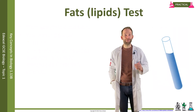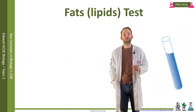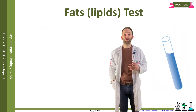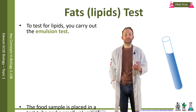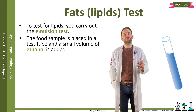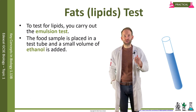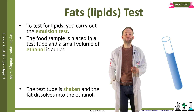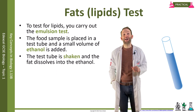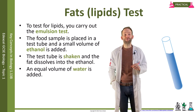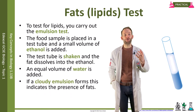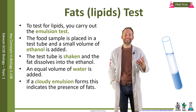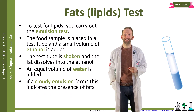To test for fats or lipids, you do something called the emulsion test. You take the food sample, place it in a test tube, and add a small volume of ethanol. You then shake it so that the fat dissolves into the ethanol. Then you add an equal volume of water, and a cloudy emulsion will form, which indicates the presence of fats.